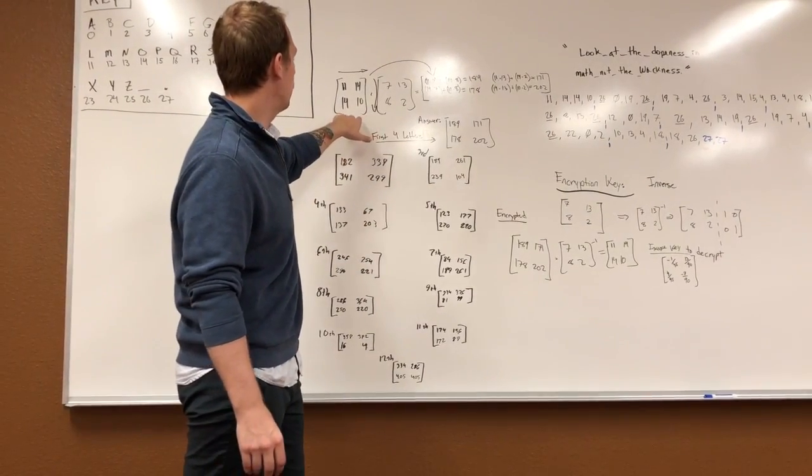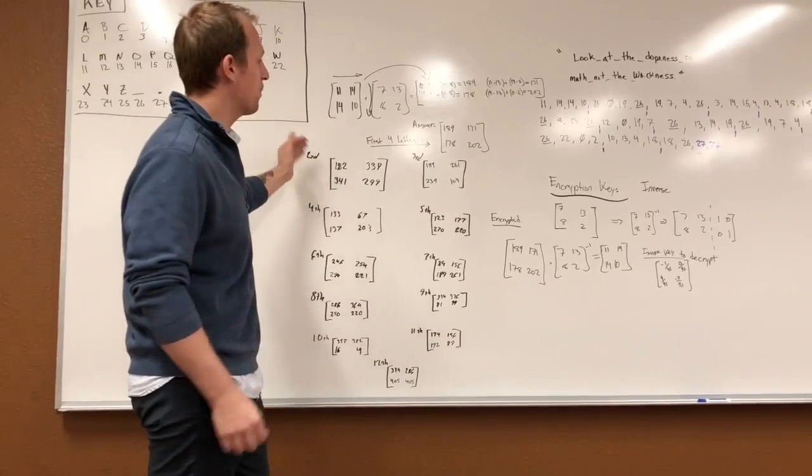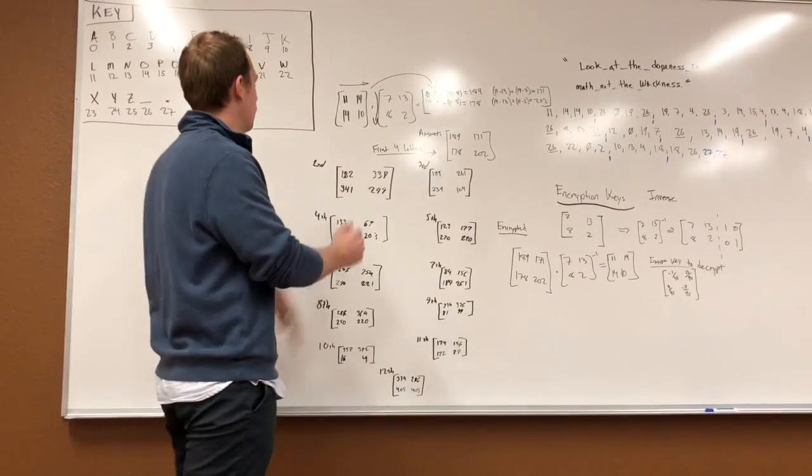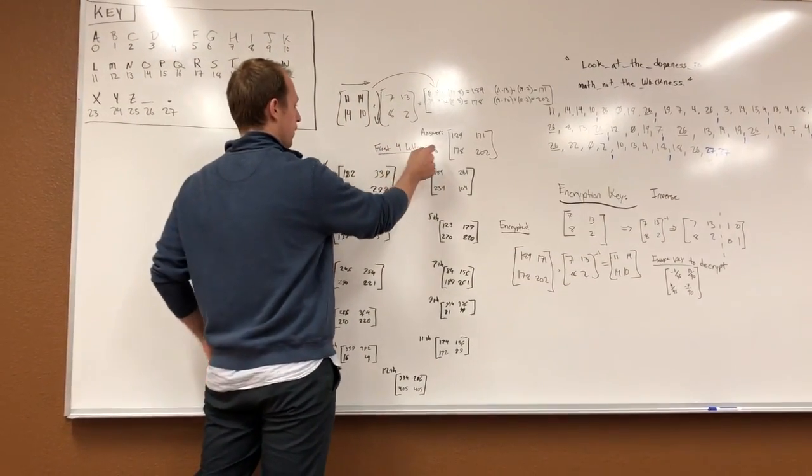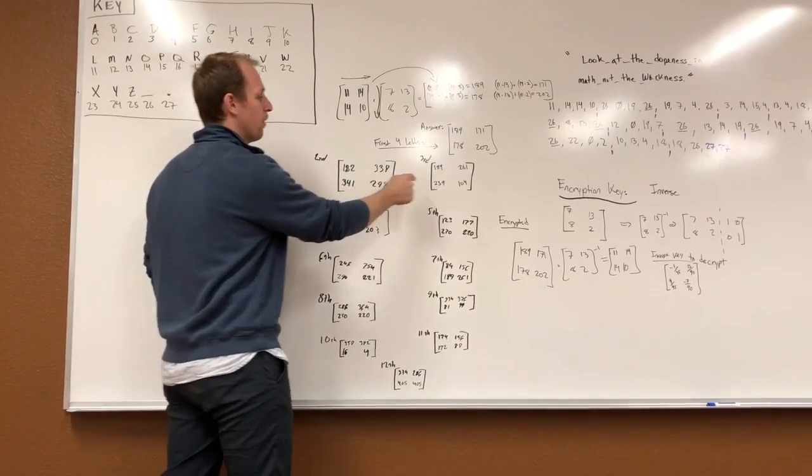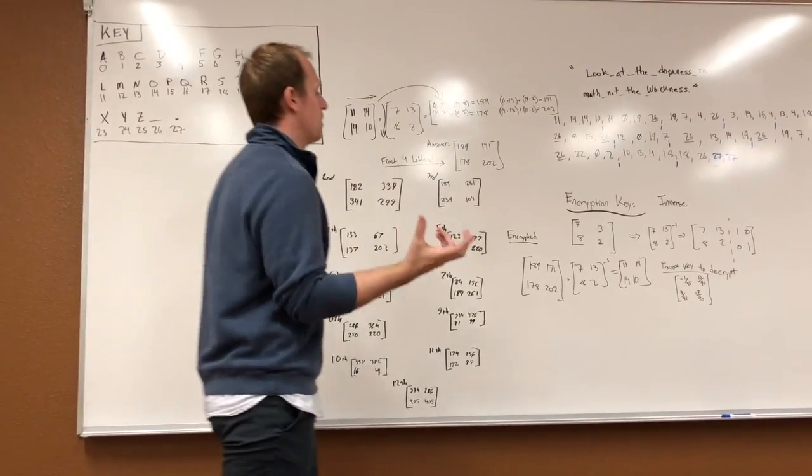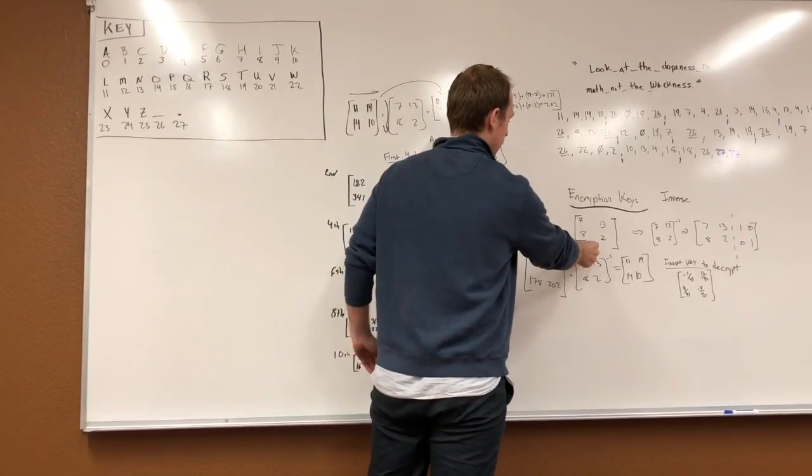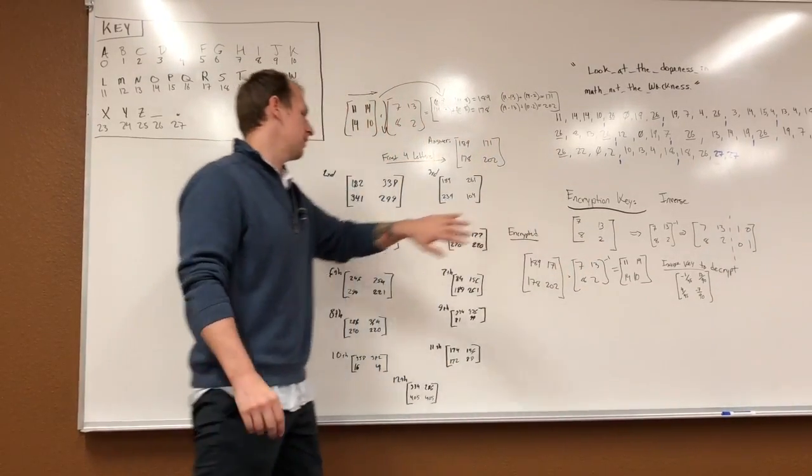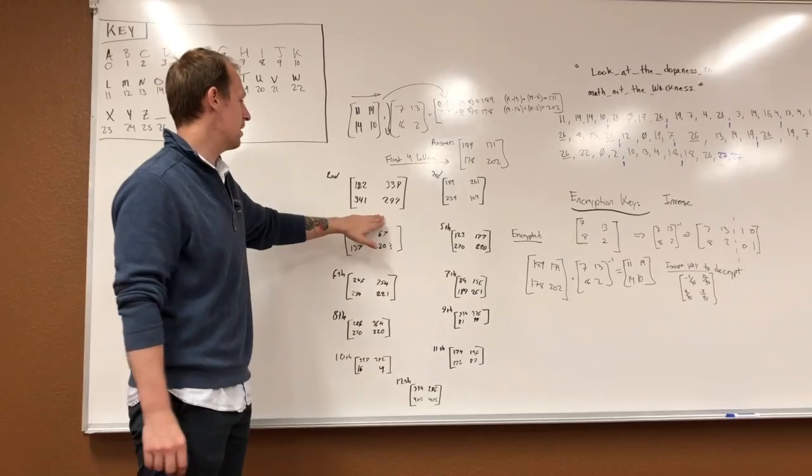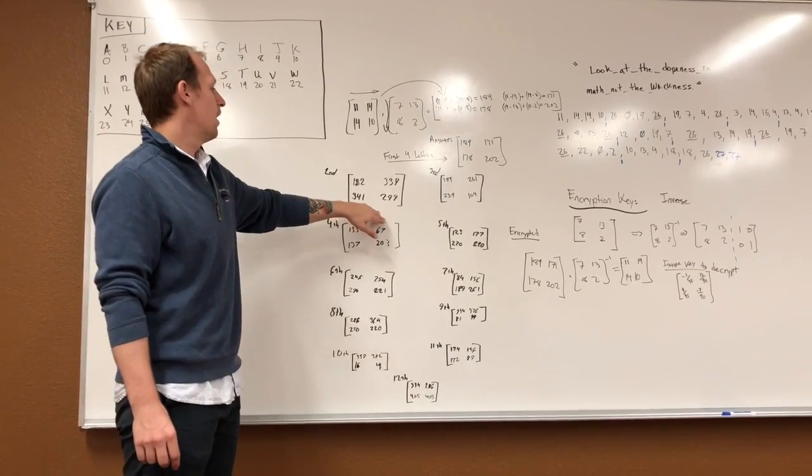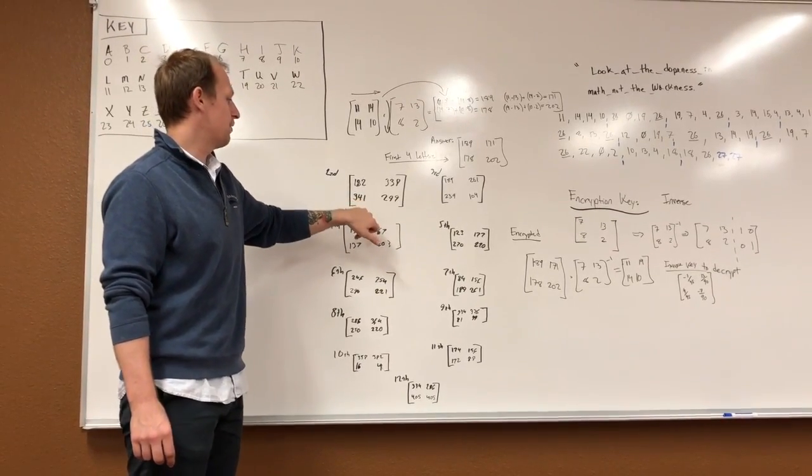So as we go through and multiply this across, we went through the rest of the message in blocks of 4. Here's our first block, second block, third block, fourth block, and so on. Each time we're doing this, we're multiplying it by the encryption key 7, 13, 8, 2. So every time we multiply, we get these numbers: 182, 338, 341.